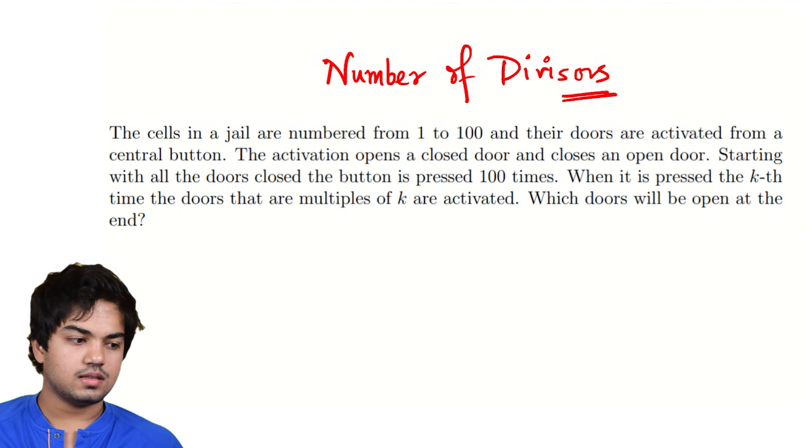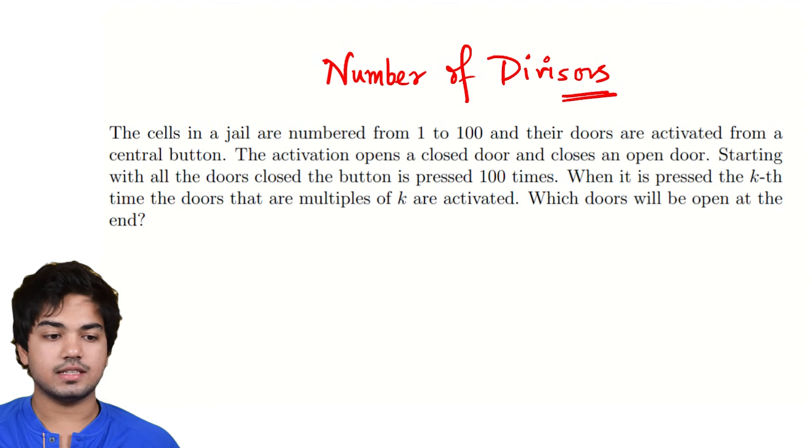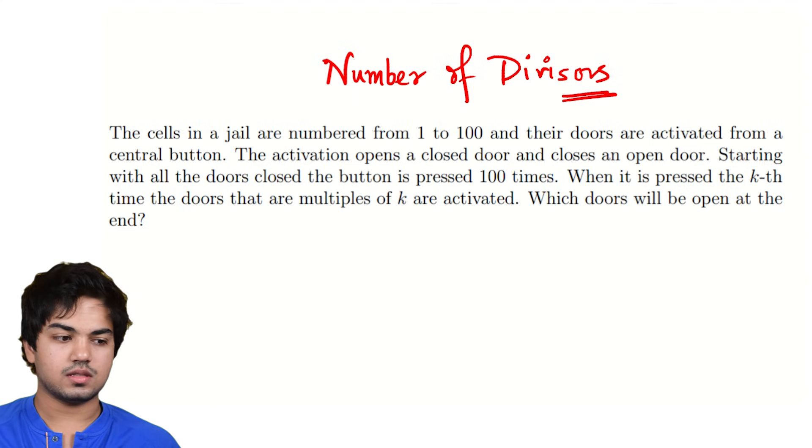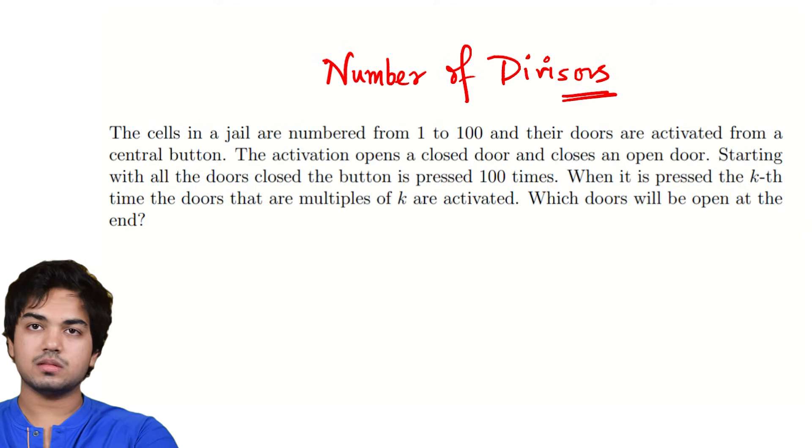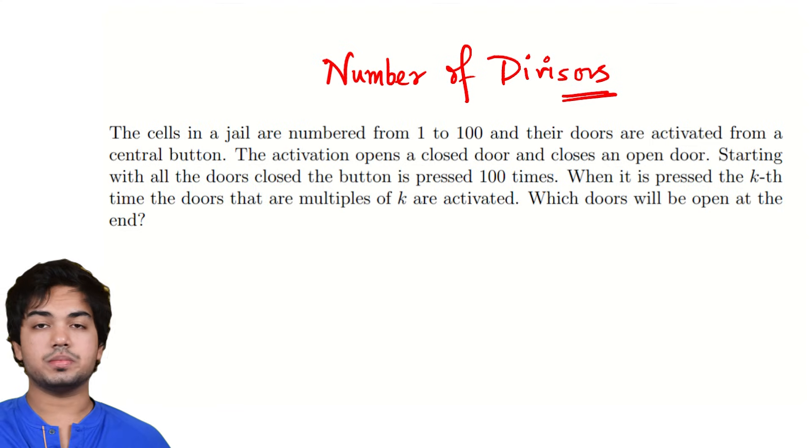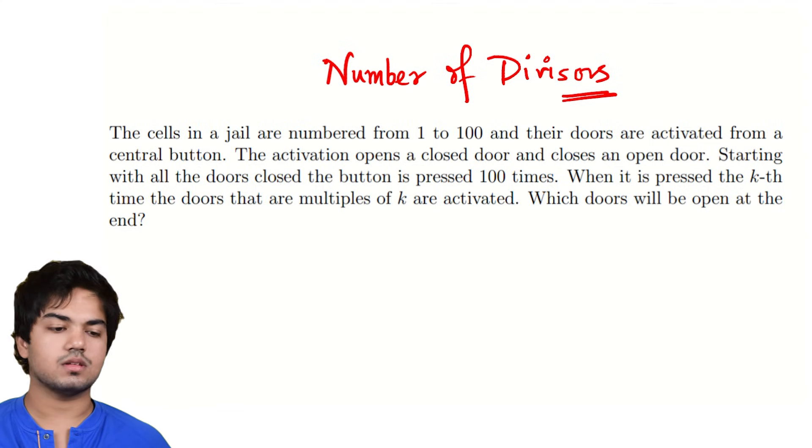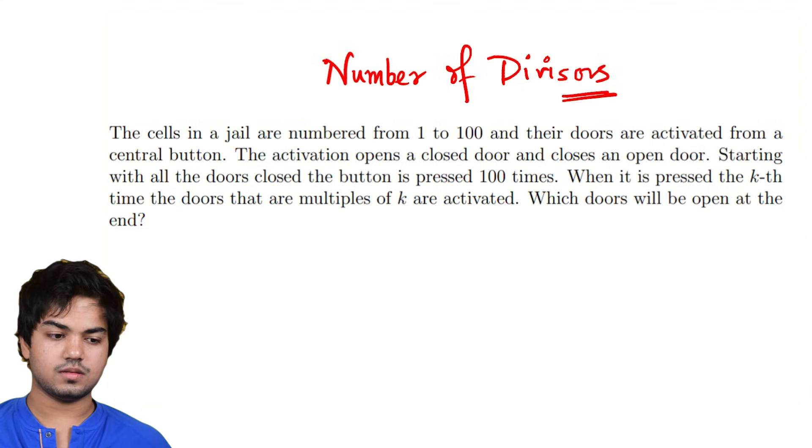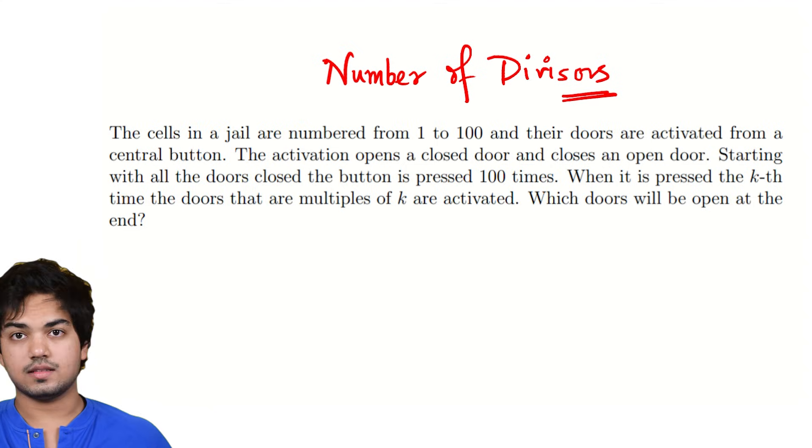Let's look at this problem. The cells in a jail are numbered from 1 to 100 and their doors are activated from a central button. The activation opens a closed door and closes an open door. So once you press the button, wherever it is, it flips essentially, right? It flips an open door to a closed door and vice versa. Starting with all the doors closed and the button is pressed 100 times. When it is pressed the kth time, the doors that are multiples of k are activated. Which doors will be open at the end?